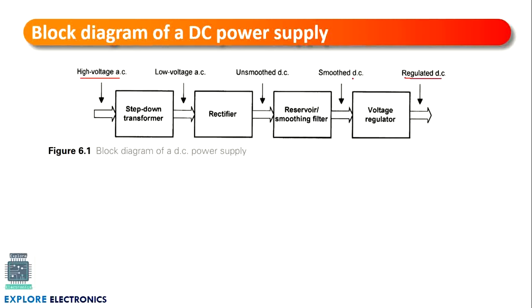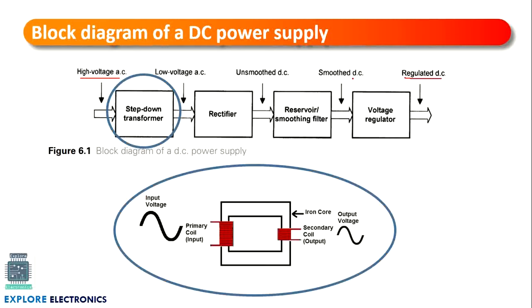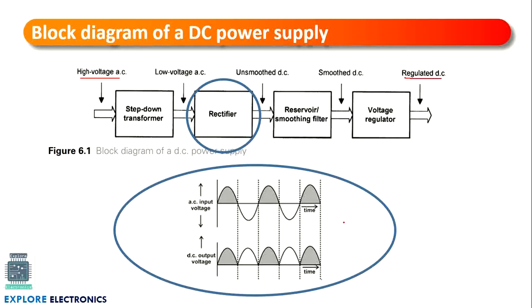Let us see the blocks one by one. First, the step-down transformer: it has two coils on an iron core. The primary coil receives the high voltage, and the secondary coil has fewer turns compared to the primary coil. The output is taken at the secondary coil, where the high voltage AC is converted into low voltage AC — the step-down transformer reduces the amount of voltage.